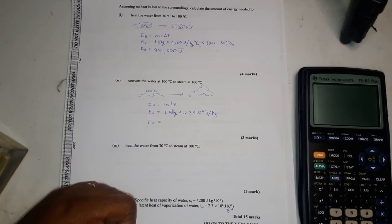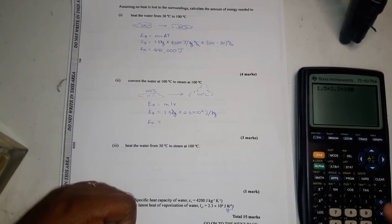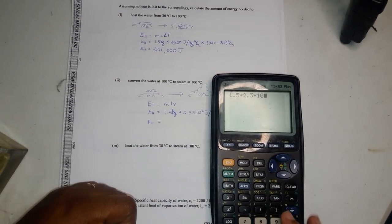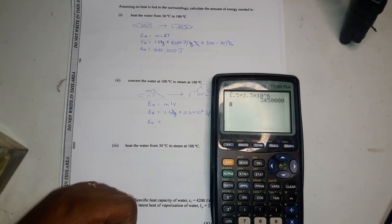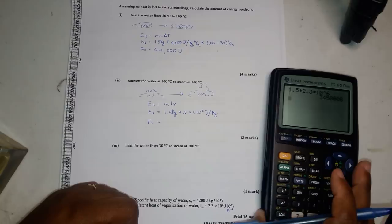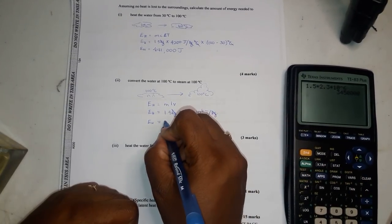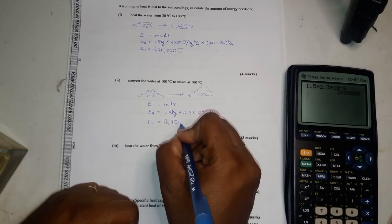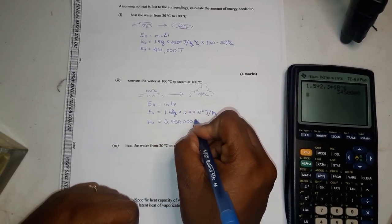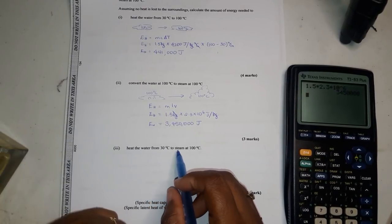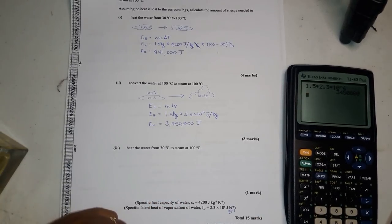And it's 1.5 times 2.3 times 10 to the 6, which equals 3,450,000 joules per kilogram. This is the heat to convert the water from 30 to steam at 100 degrees Celsius.